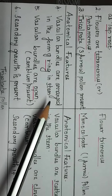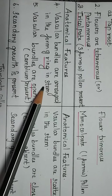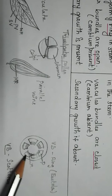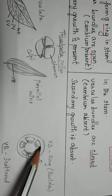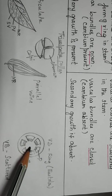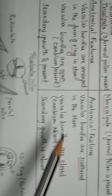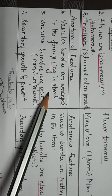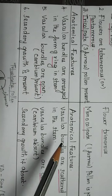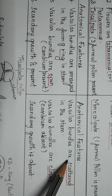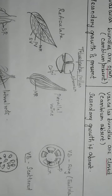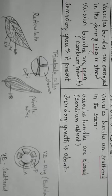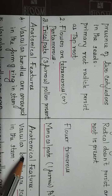For anatomical features, in dicot stem, vascular bundles are arranged in the form of a ring with a central pith present. In monocot stem, vascular bundles are scattered throughout the stem.